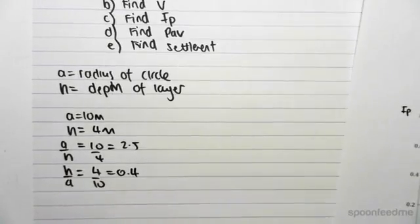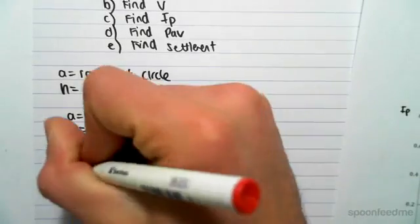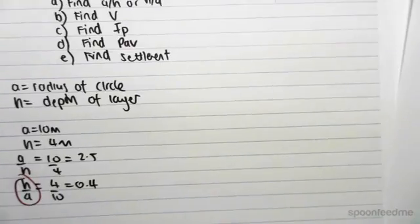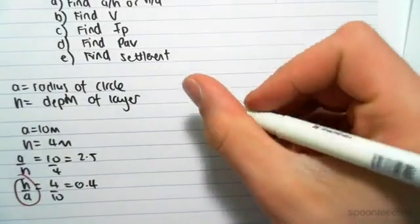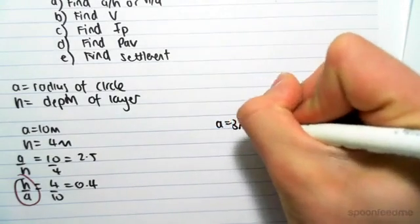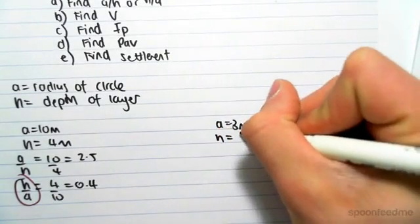Which means that we'd have to use h on a as the value. This in contrast to say our a equaled 3 meters and our h equaled 6.